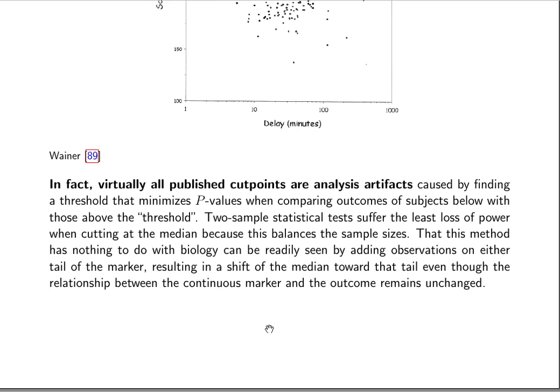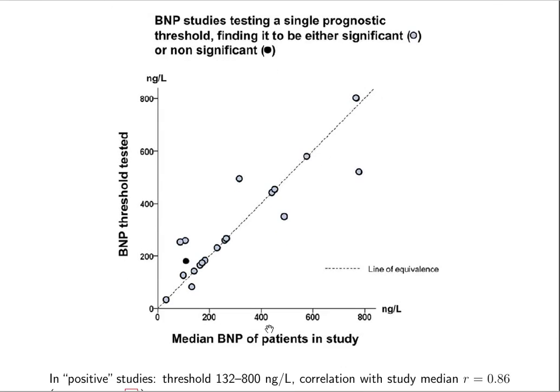And what cut point is going to have maximum power is the median because you have equal sample size on each side of the cut point, and the power of a t-test is maximum for a fixed total sample size when the two sample sizes are equal. So what this paper found in looking at a marker BNP is that in the published literature where studies claim to find a threshold for BNP, the threshold turned out to coincide almost with the sample median of BNP for patients in that particular study.